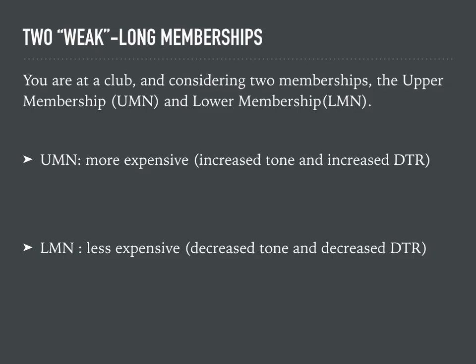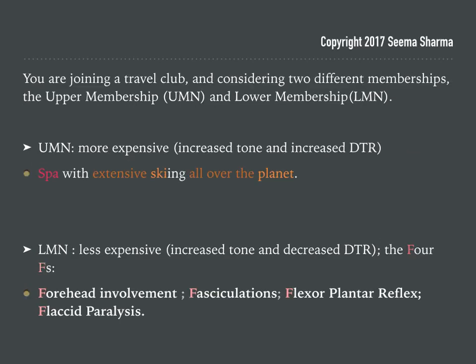The UMN membership offers a spa with extensive skiing all over the planet. Spa means spastic paralysis, extensive is extensor, ski is for Babinski, and planet is for plantar. This reminds you that extensor plantar reflex is the same thing as Babinski sign positive — an abnormal finding that indicates an upper motor neuron lesion.